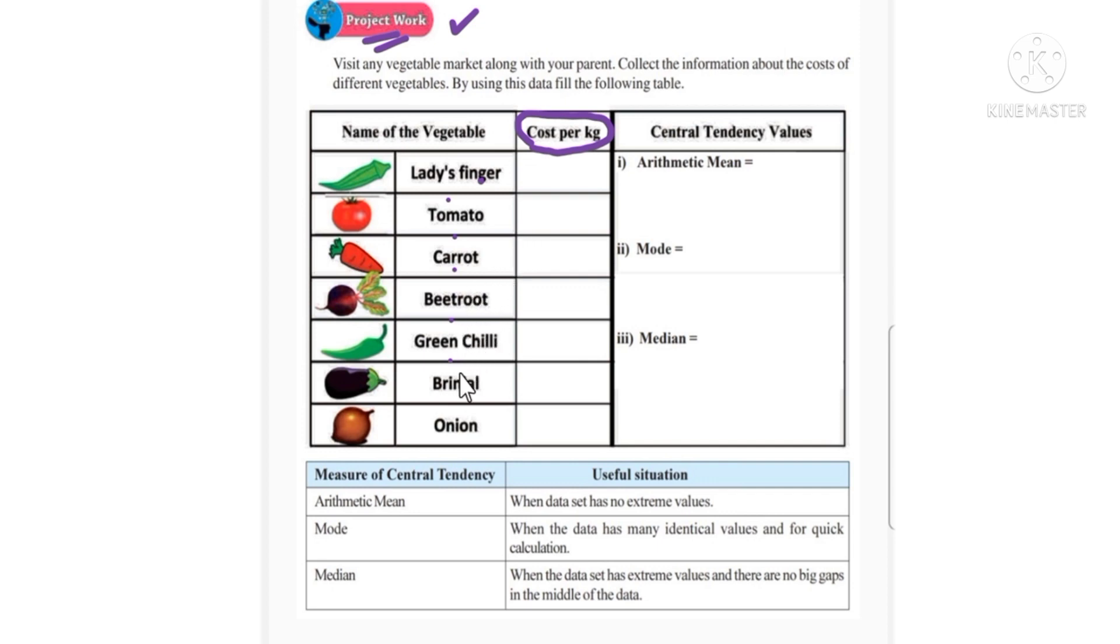After that, tomato cost per kg, carrots, beetroot, green chili, brinjal, onion. That cost should be written in the table format.